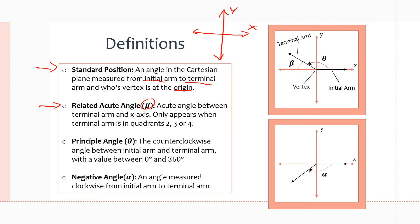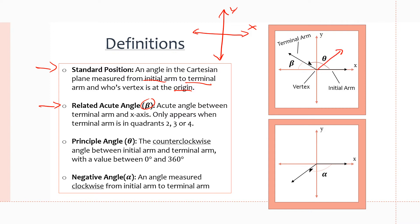The related acute angle is the acute angle between the terminal arm and the nearest x-axis. It only appears in the second, third, and fourth quadrants of the Cartesian plane, because in the first quadrant it would be the same as the principal angle. So the related acute angle is really only needed in the second, third, and fourth quadrants.